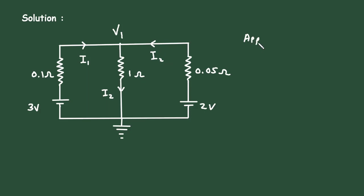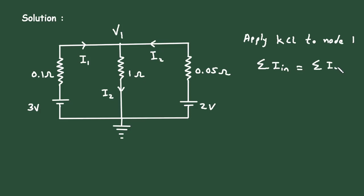Now we will apply KCL, that is Kirchhoff's Current Law, to node 1. According to KCL, the summation of all currents entering a node is equal to the summation of all currents leaving the node. The entering currents are I1 plus I3, and the leaving current is I2.